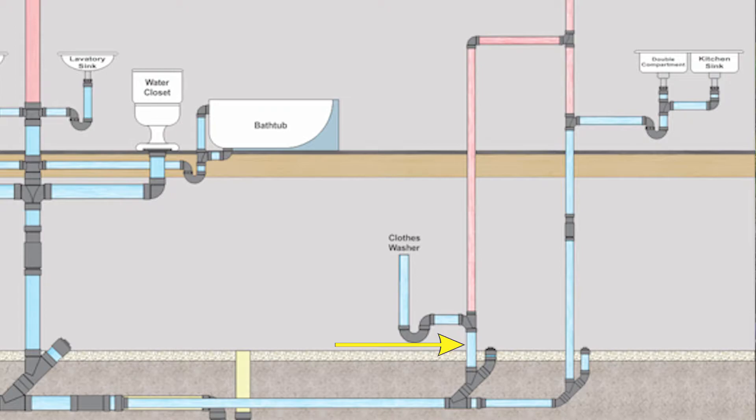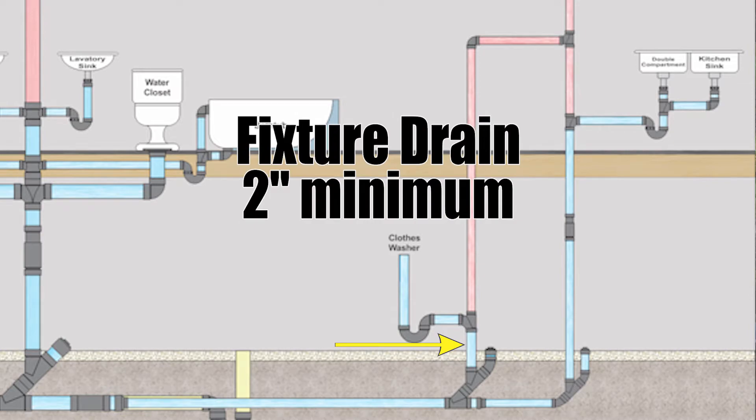Now what is this pipe right here? Well we have a single fixture with its own vent. Therefore this is a fixture drain. That too will be two inches in size.